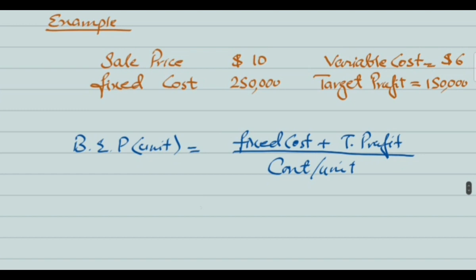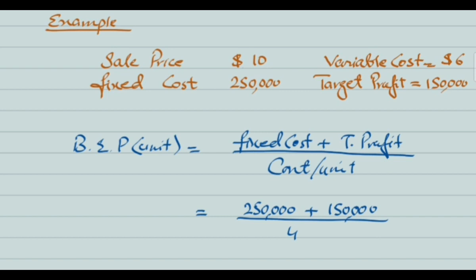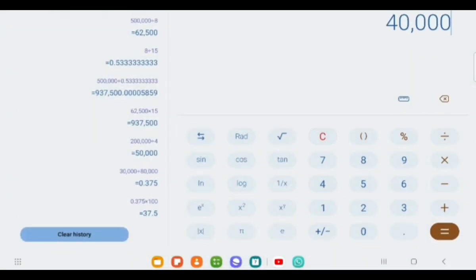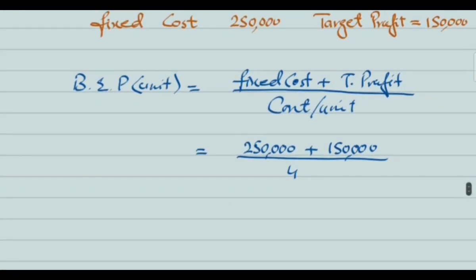For example: sale price is $10, variable cost is $6, fixed cost is $250,000, and target profit is $150,000. Contribution per unit is $10 minus $6 equals $4. So the numerator is $250,000 plus $150,000 equals $400,000, divided by $4, giving a break-even point of 100,000 units.